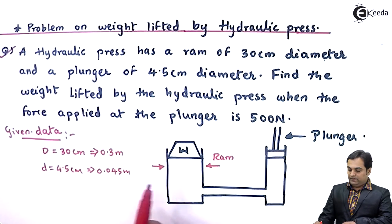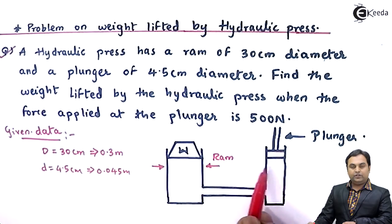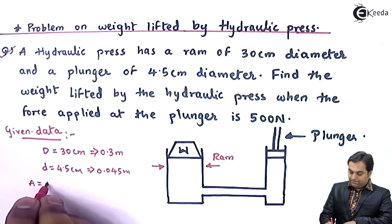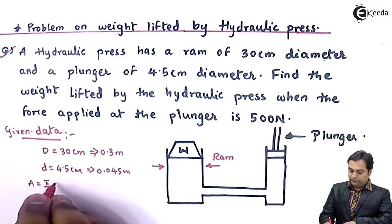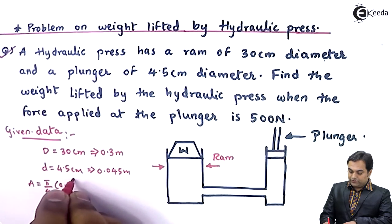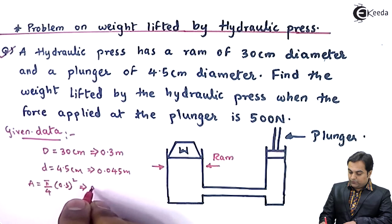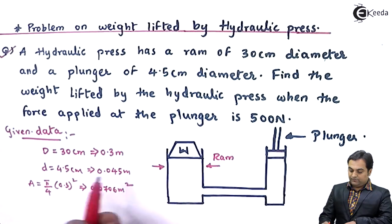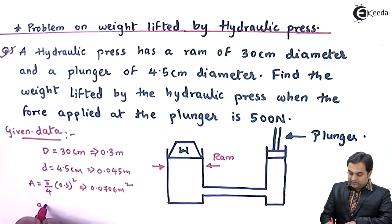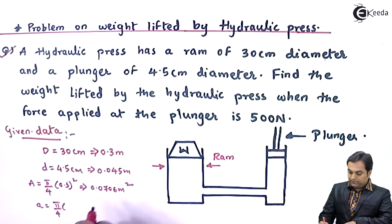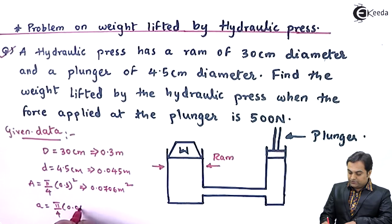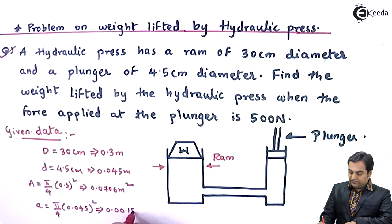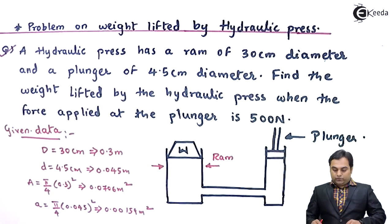Now that we have capital D and small d, we can calculate the area of the RAM and the area of the plunger. Capital A, the area of RAM, is pi by 4 into D squared, which gives 0.0706 meters square. For the plunger, small a is pi by 4 into 0.045 squared, which equals 0.00159 meters square.